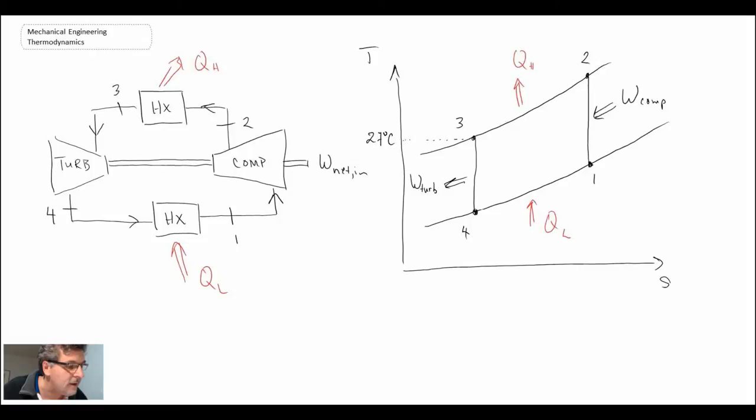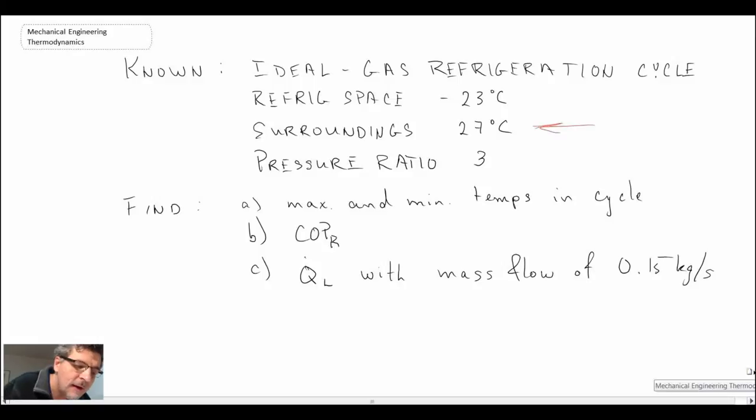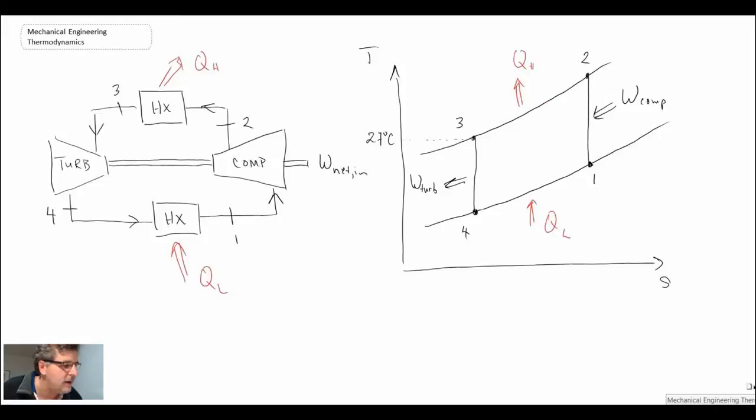The other thing it's telling us is that the refrigerated space will be at minus 23 degrees Celsius. If the refrigerated space is at minus 23 degrees Celsius, that means our temperature 1 cannot go above that, so it has to be minus 23 degrees Celsius. We won't be able to cool if we go above that temperature. Realistically you might want to be a little bit below, but we'll consider it to be minus 23 degrees Celsius for our analysis. That's an indirect way of giving us information in this problem.